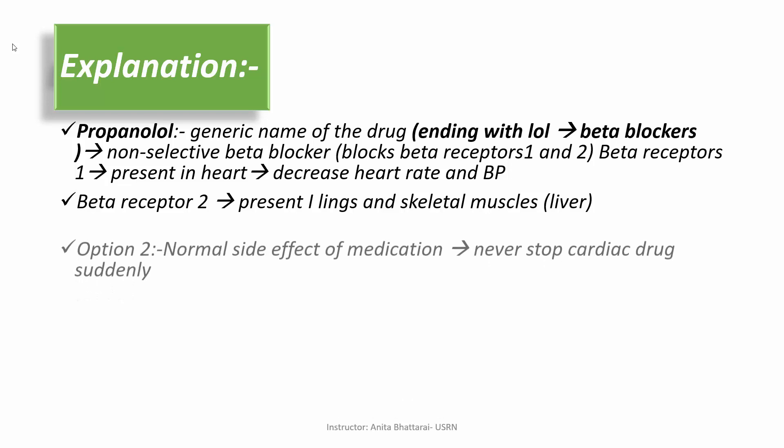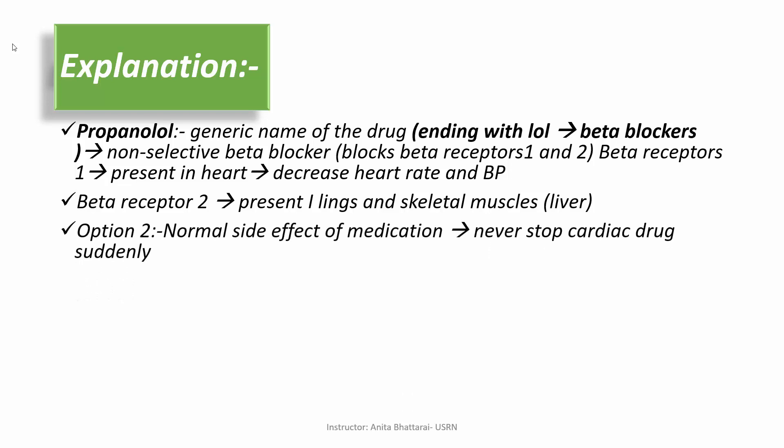Furthermore, when blood glucose decreases, the process called glycogenolysis normally takes place to raise blood sugar back to normal. However, with propranolol blocking beta-2 receptors, glycogenolysis does not happen. So there are two risk factors: first, we cannot recognize falling blood glucose because we cannot assess the signs of increased heart rate; and second, glycogenolysis does not occur to maintain normal blood glucose. Therefore, the patient has a high risk of becoming hypoglycemic, and blood glucose must be monitored very closely. Option one is the correct answer.